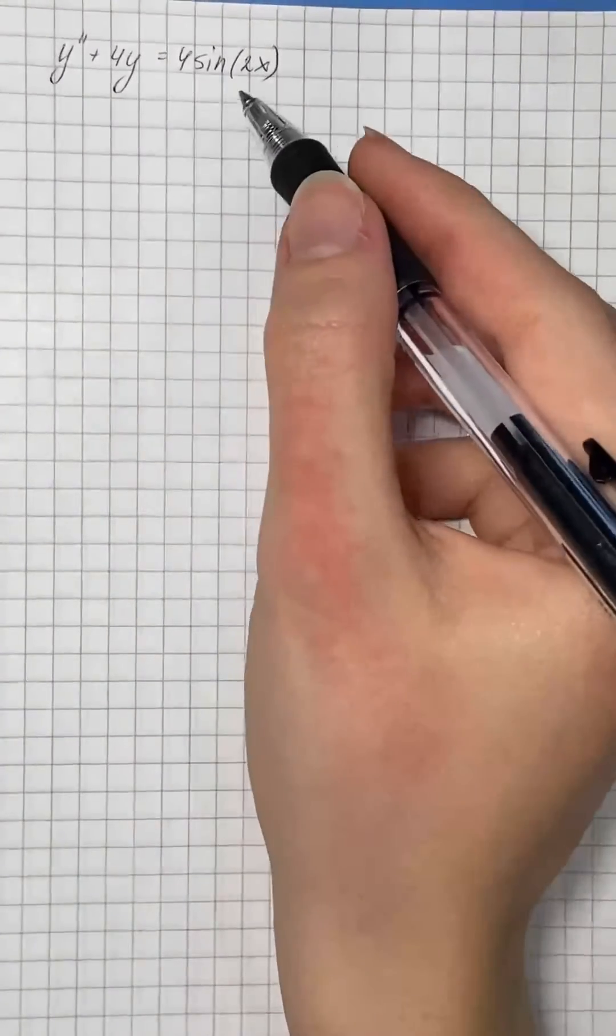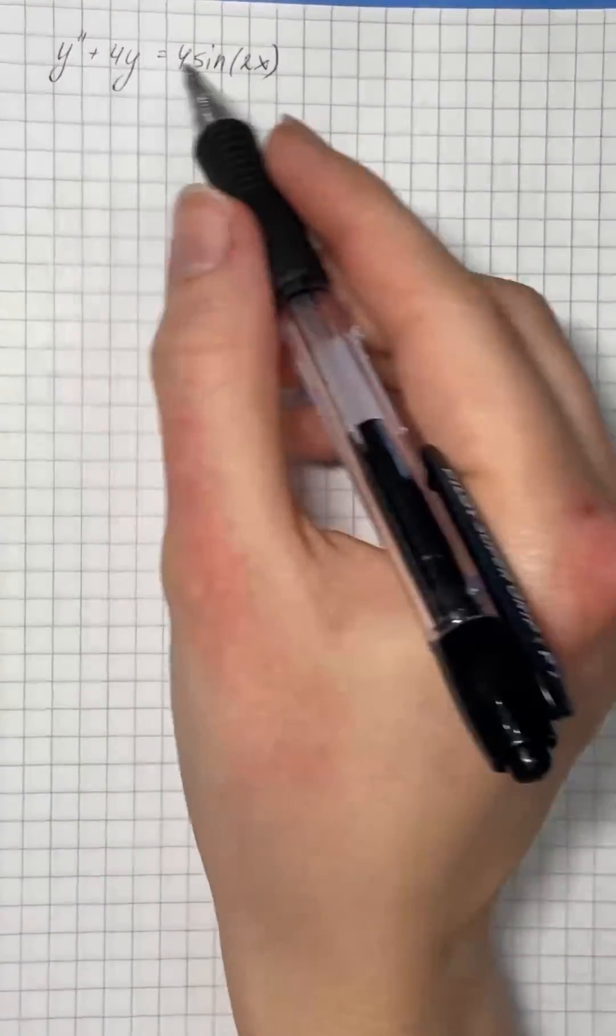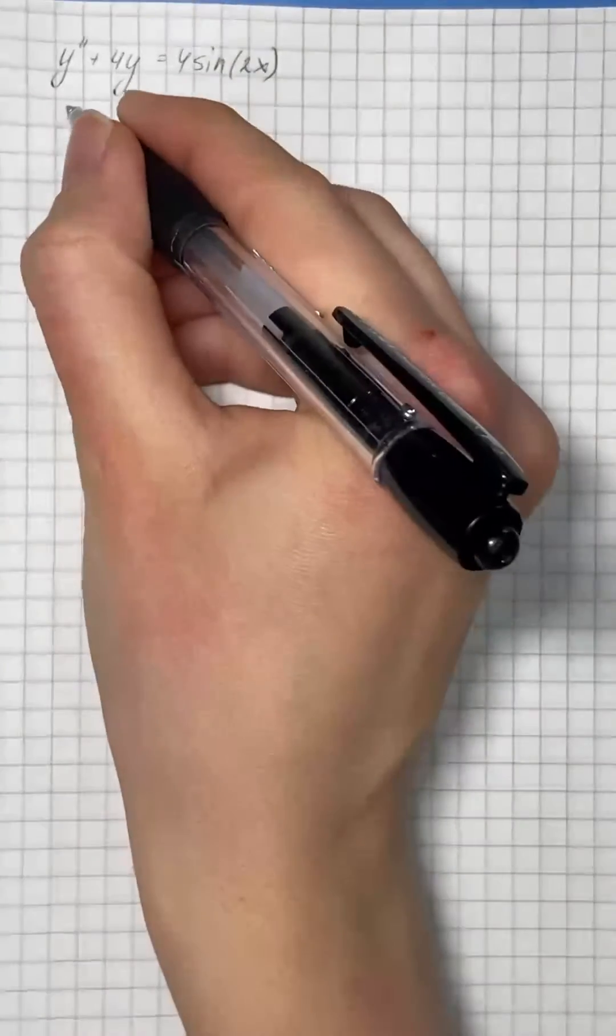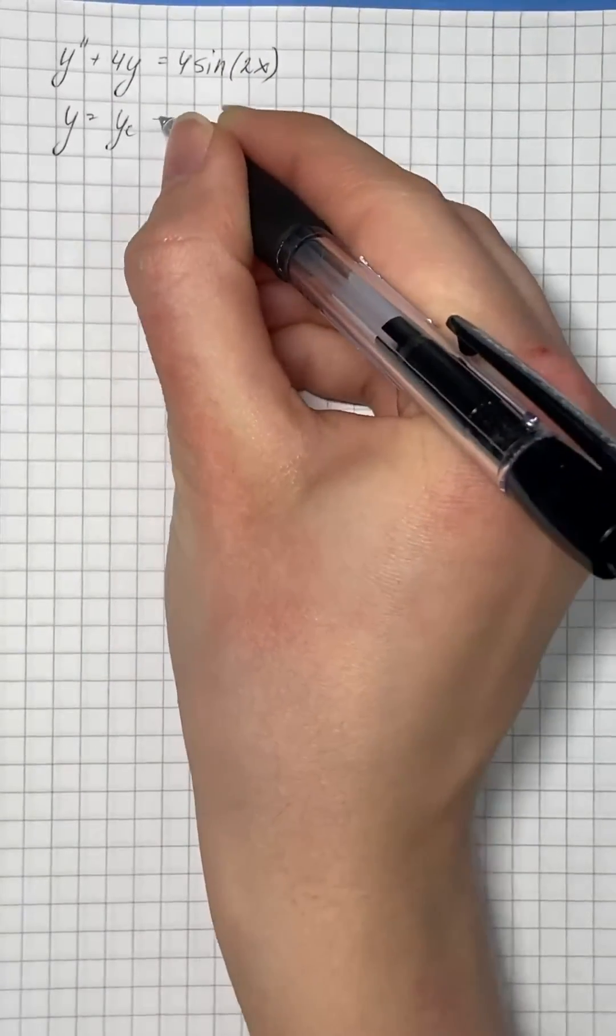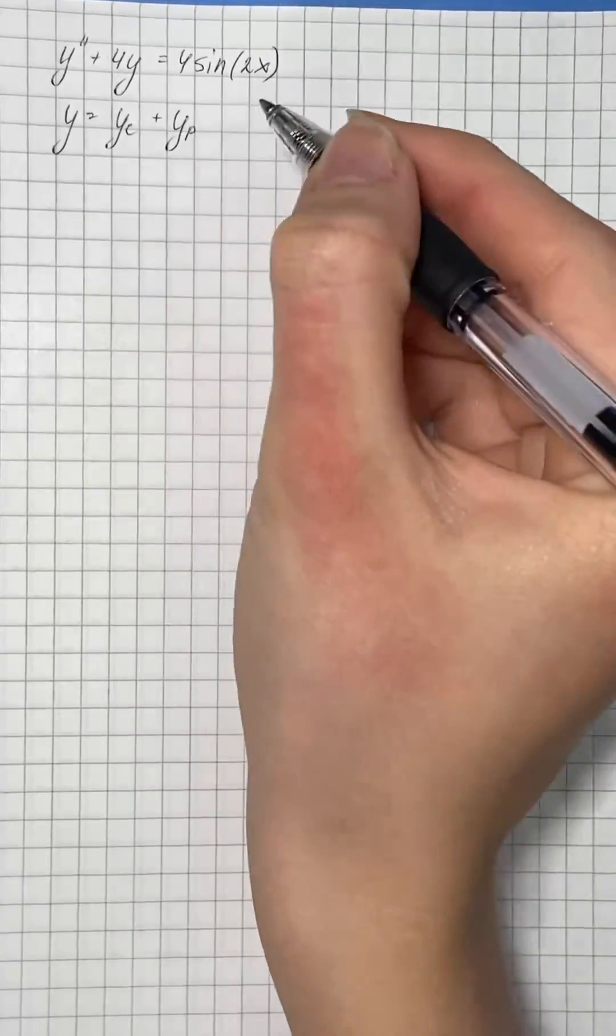The given equation is a second-order linear non-homogeneous differential equation, and the general solution can be written as the sum of complementary solution and particular solution.